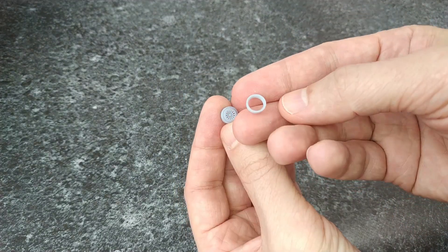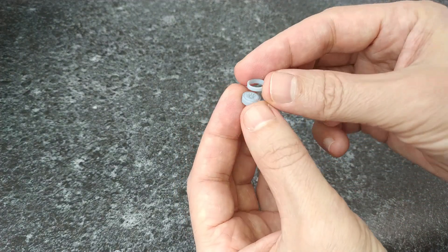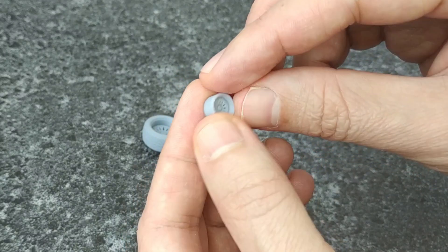Tire and rim are separate parts, even in scale 1:64, which makes it easier to paint in the desired colors.